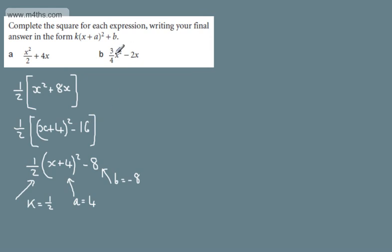So with this one, I'm going to take out in b a factor of 3 quarters. So if I do that, I'm going to have 3 quarters. I'll have now x squared. And if I divide minus 2 by 3 quarters, I'm going to have minus 8 over 3. So I'll have minus 8 over 3 x.